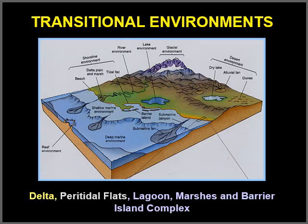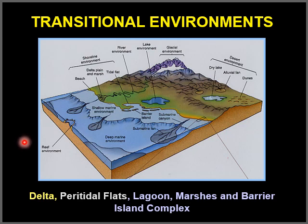Transitional environments include delta, peritidal flats, lagoon, marshes, and barrier island complex. The boundary between the non-marine and marine environment is a gradual transition. Coastal regions with rivers that do not carry large amounts of sediments do not have deltas. Instead, a system of coastal lagoons, estuaries, and tidal flats develops. The dominant influence on this system is the rise and fall of tides.